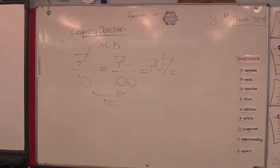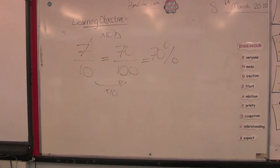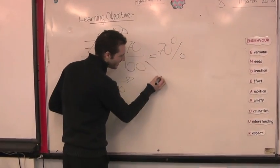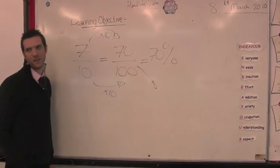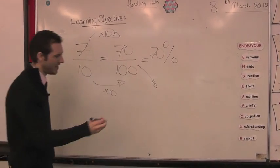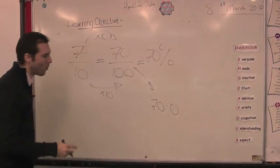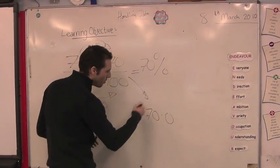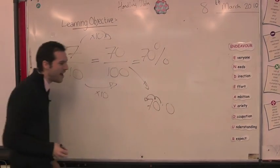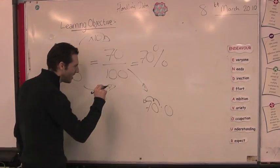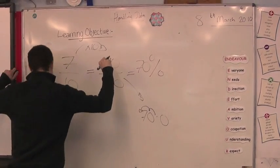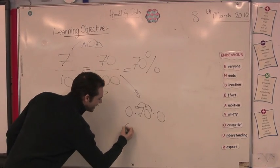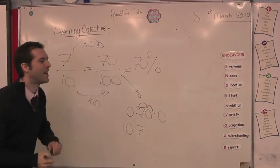Yeah, out of 100. What about as a decimal? Well, I know that this is 70 divided by 100. Which way do the numbers move? When dividing, the decimal moves to the left, two places to the left. And so it goes there — so what's that as a decimal? 0.7. Voilà. And I thank you.